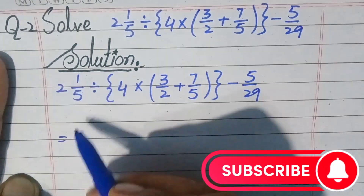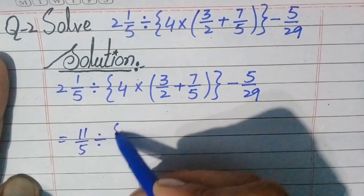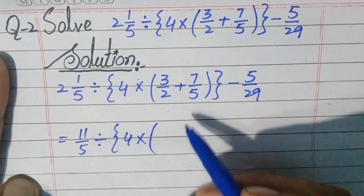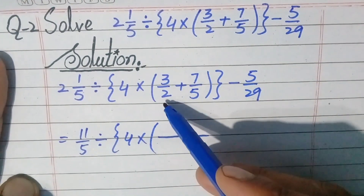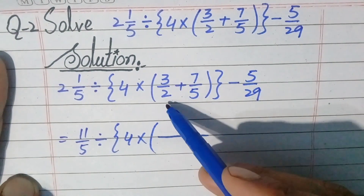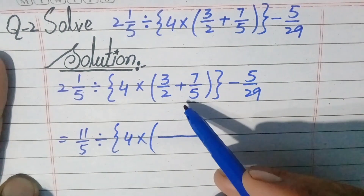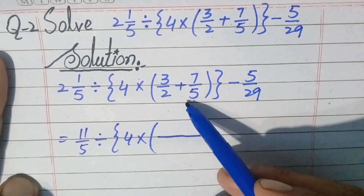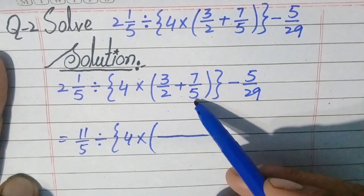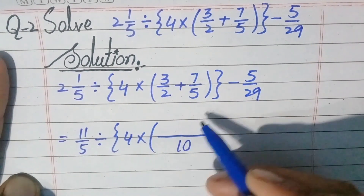In the next step, write equality and change the mixed number to improper fraction. This mixed number becomes: 5 times 2 is 10, 10 plus 1 is 11, so the answer is 11/5. Then divide, braces open, 4 multiply, parenthesis open. Inside the parenthesis we need to add two fractions. The denominators are prime numbers, so the LCM of 2 and 5 is their product: 2 times 5 is 10.